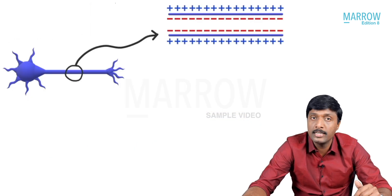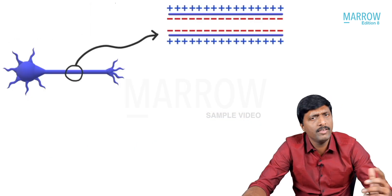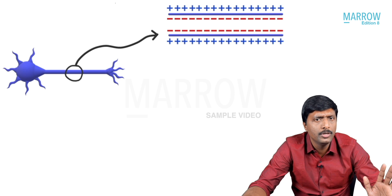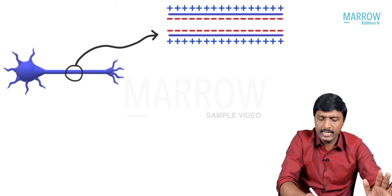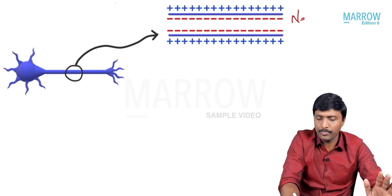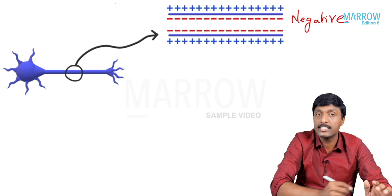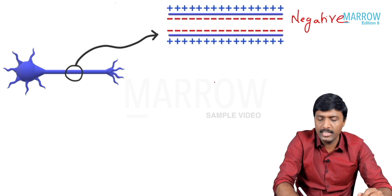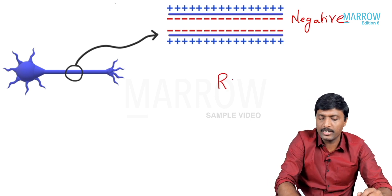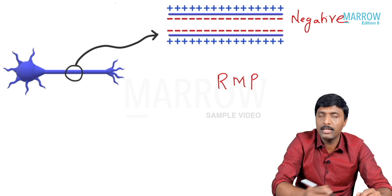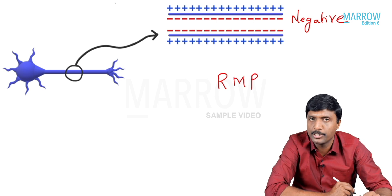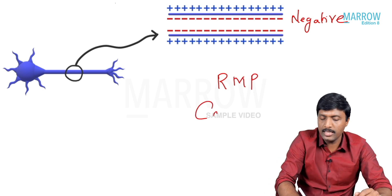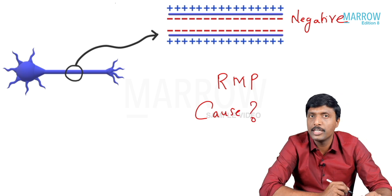Now look into this neuronal cell. As we have seen in the previous diagram, the inside is always negative. The inside of any cell is always negative. This inside negativity is our resting membrane potential. They will definitely ask you: what is the cause of this resting membrane potential?